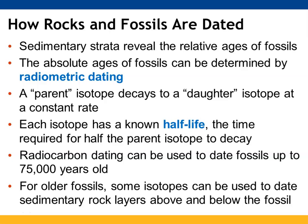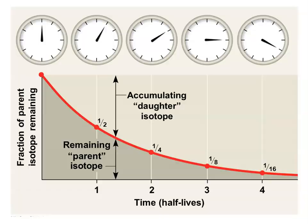The layers of strata can reveal relative ages, but we can actually date fossils absolutely using radiometric dating. A parent isotope decays to a daughter isotope at a constant rate. These rates have known half-lives — basically the time it takes for the parent isotope to decay to 50% of the original amount. We can date fossils using carbon up to 75,000 years old, and there are isotopes that can be used to date rock layers both above and below the fossil. Every half-life reduces the amount of the original isotope by one half.